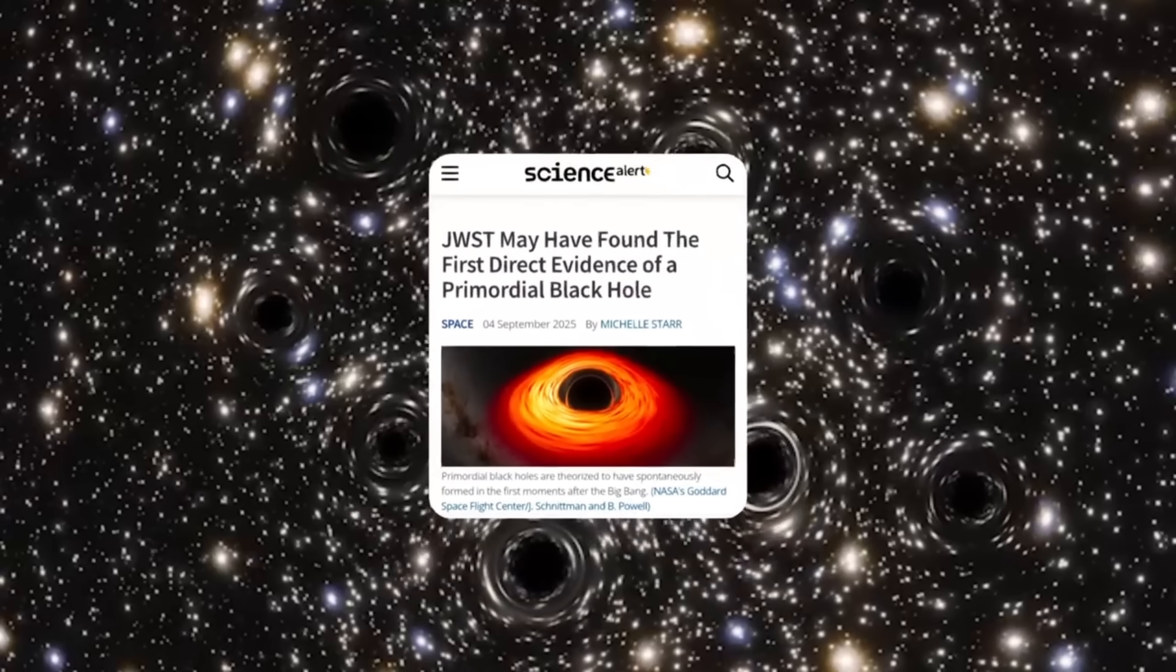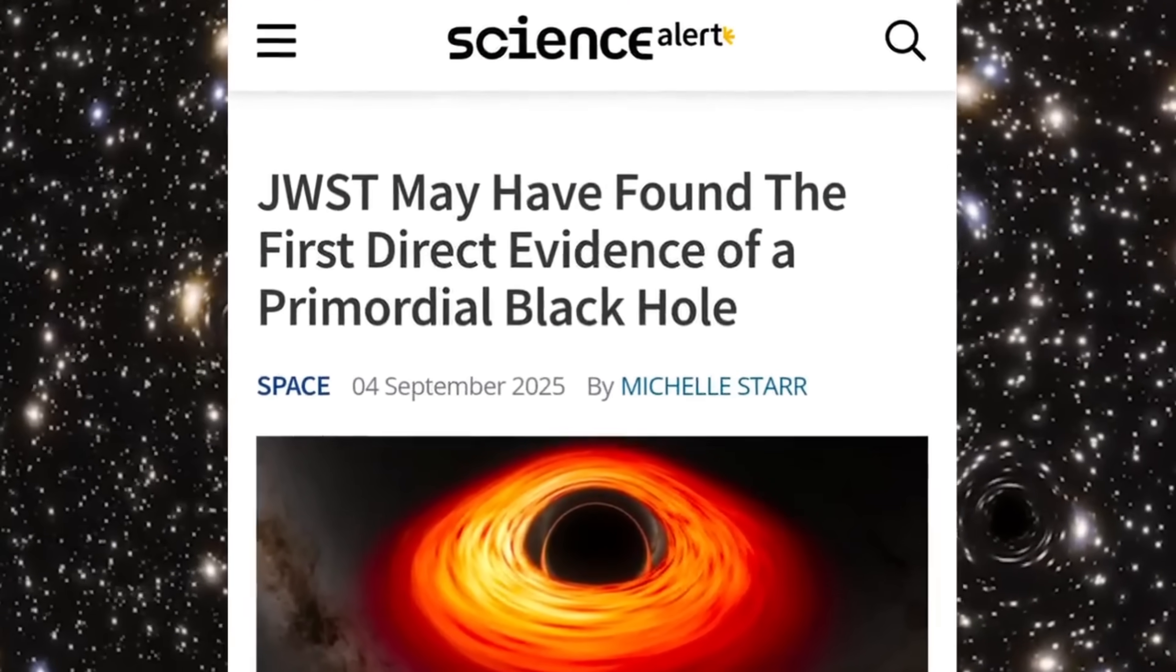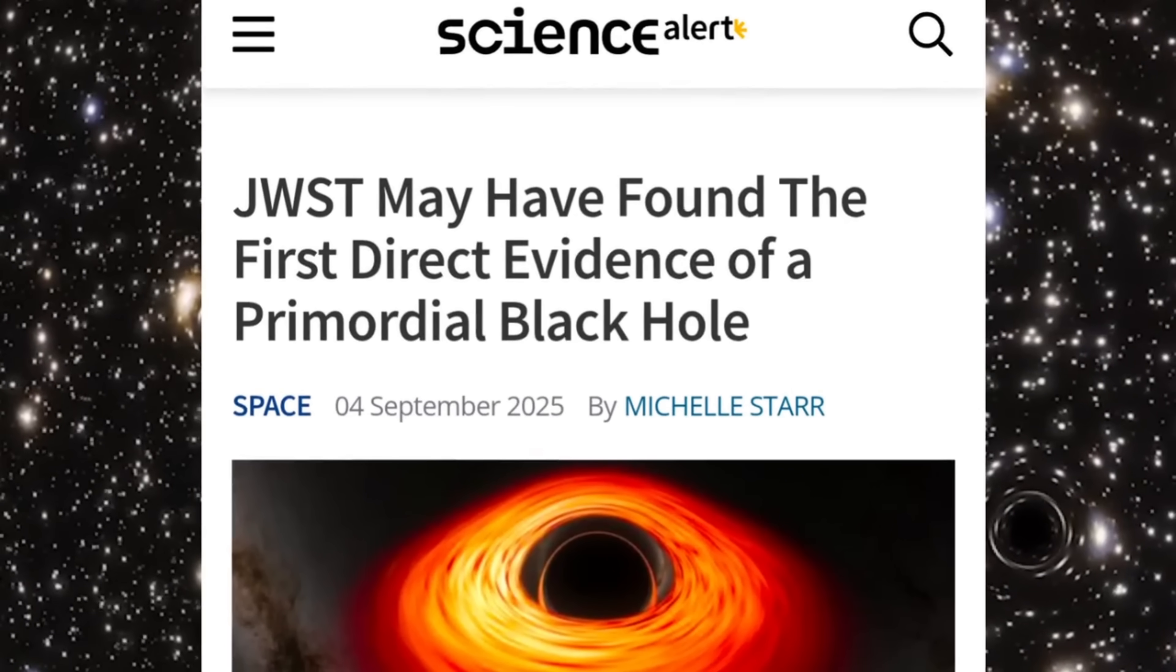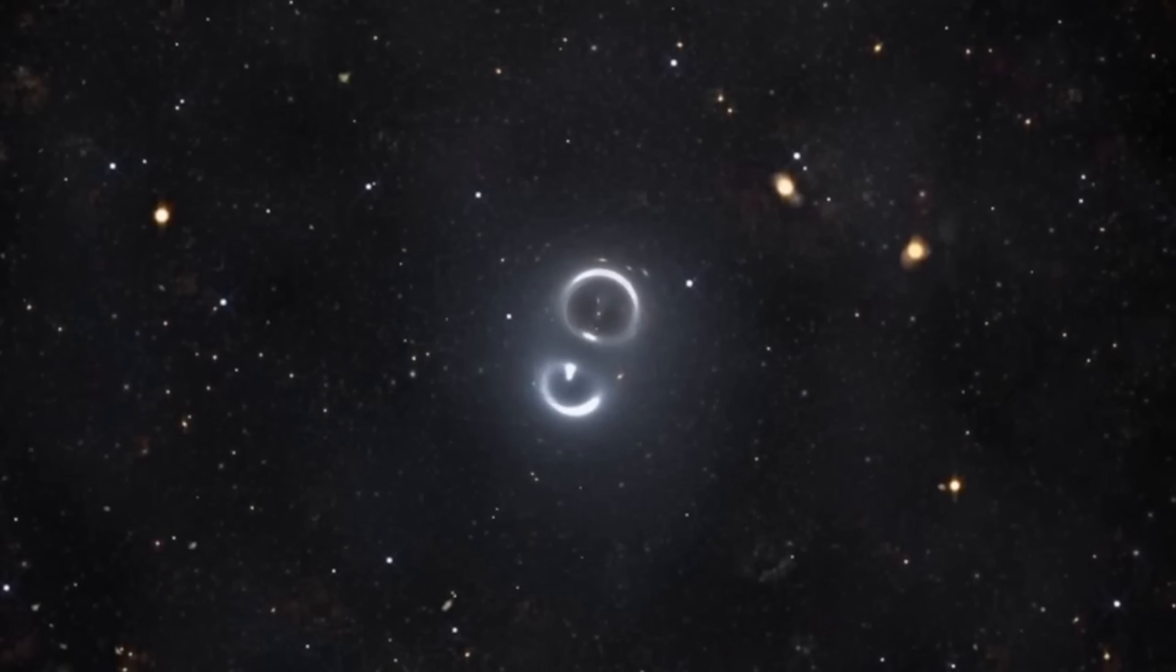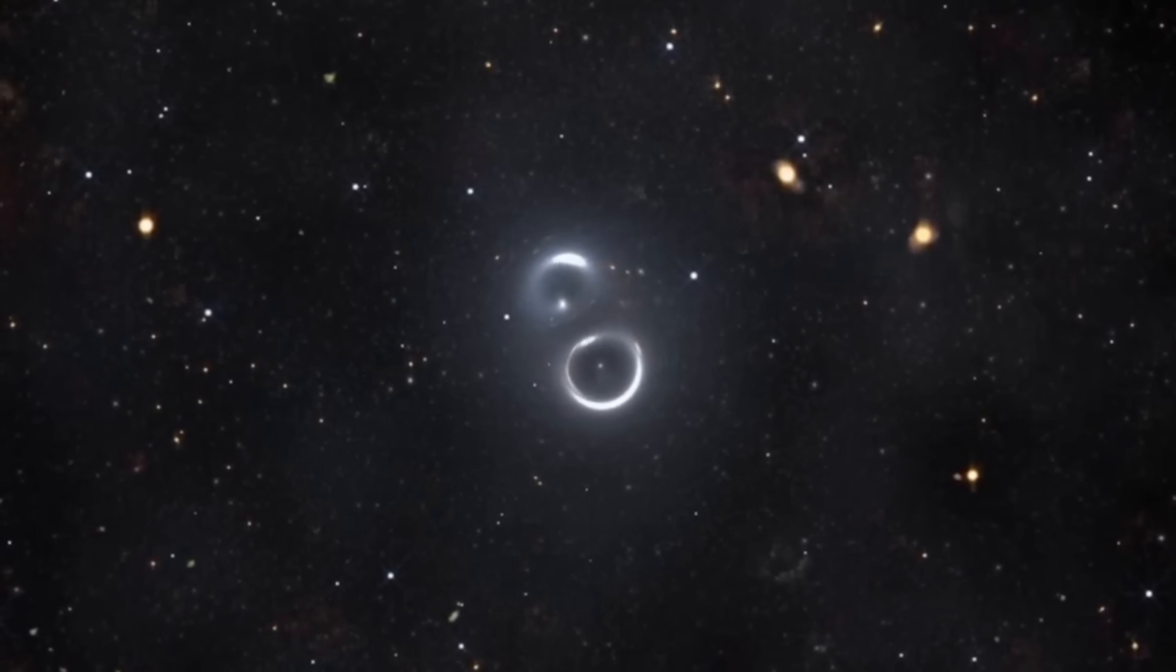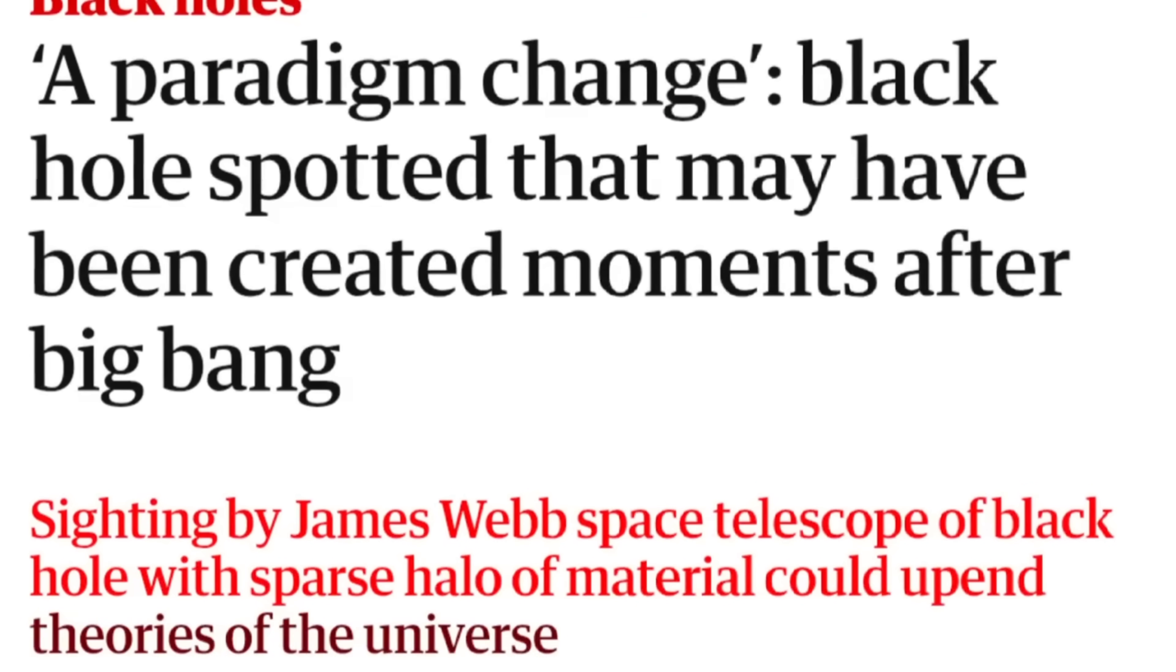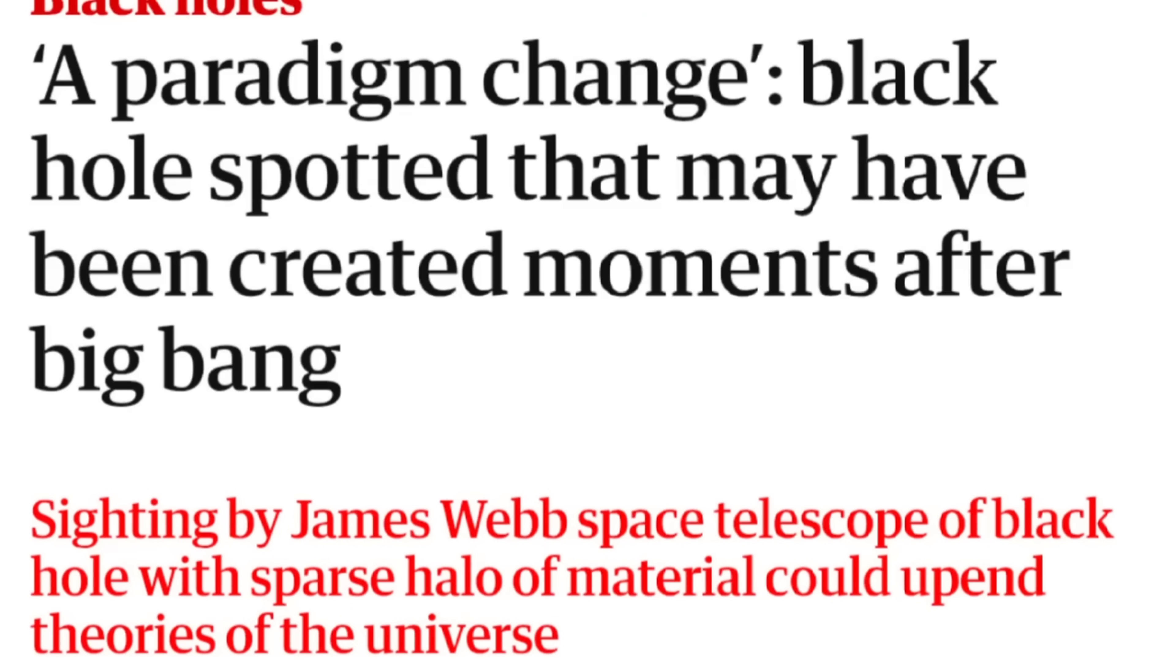Instead, it seems to be a completely different kind of black hole. Scientists call these primordial black holes, which are thought to have formed in the very first moments after the Big Bang. If that's true, it could mean black holes existed first and galaxies later grew around them. But the big question remains, how did these primordial black holes form in the first place? The standard Big Bang model doesn't provide a clear answer.